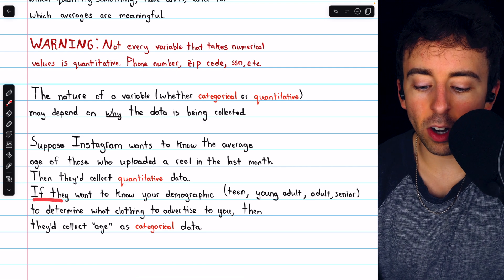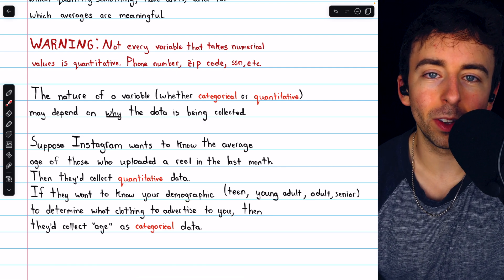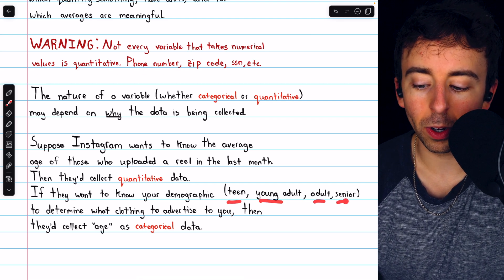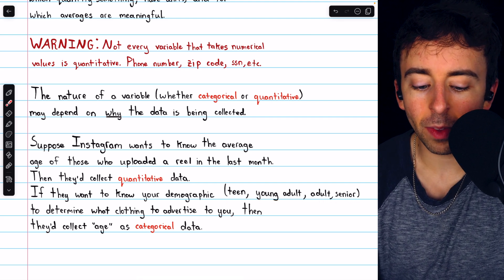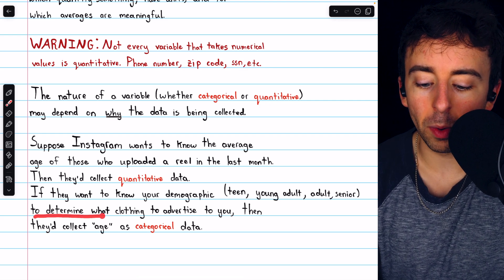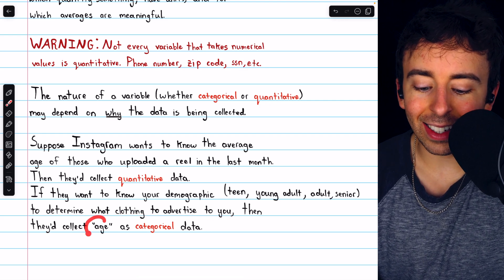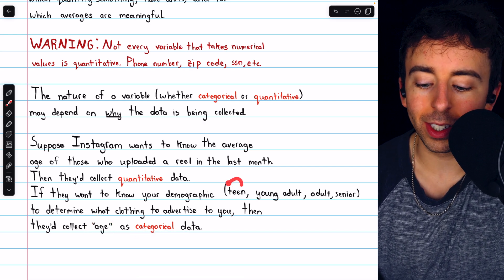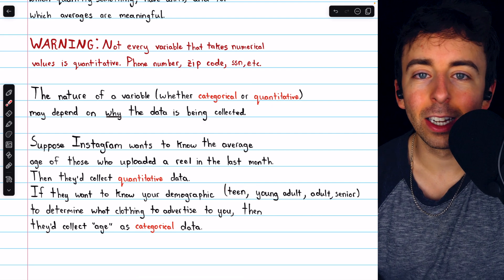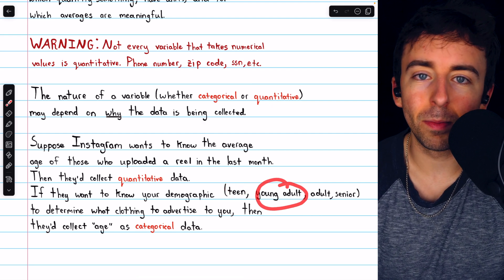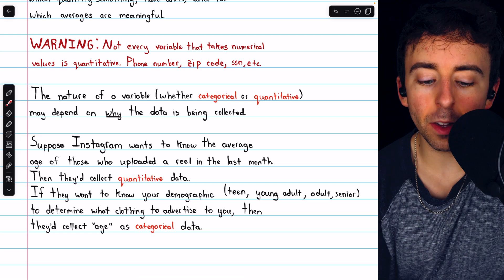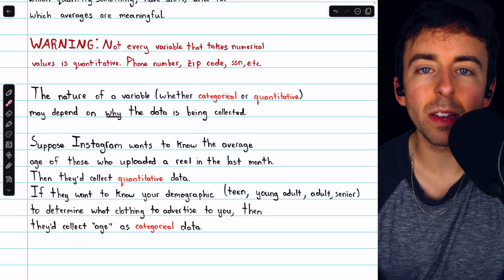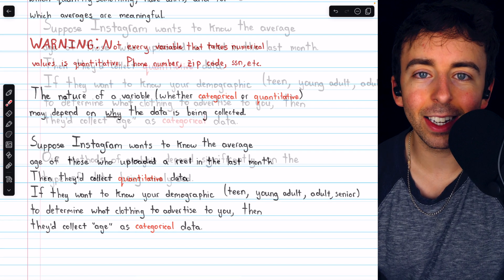On the other hand, if they wanted to know your demographic information, they want the age part of your demographic. You're a teen, a young adult, an adult, or senior. They could categorize it in many different ways. If they wanted to know that to determine what clothing to advertise to you, then they'd collect age as categorical data, placing you in one of these brackets. Are you a teen? And so they may advertise clothing that teens like. Or are you a young adult? And they would advertise some different clothing. Depending on why the data is being collected, a different level of detail may be more useful to whoever is doing the collecting.